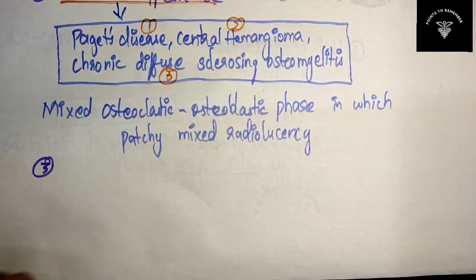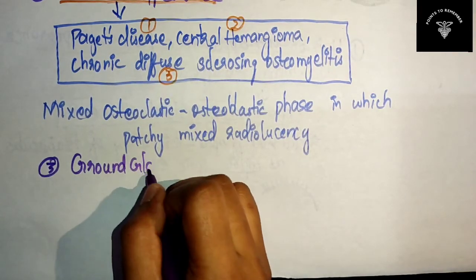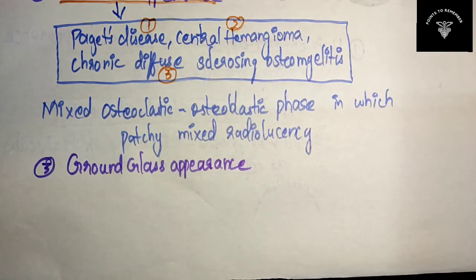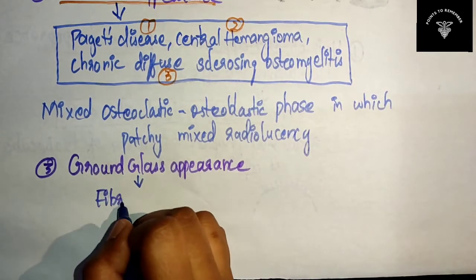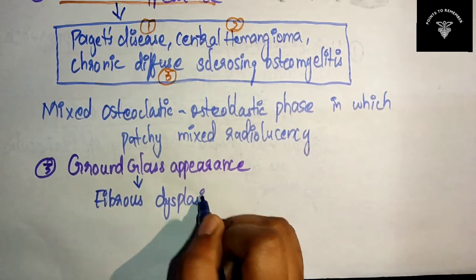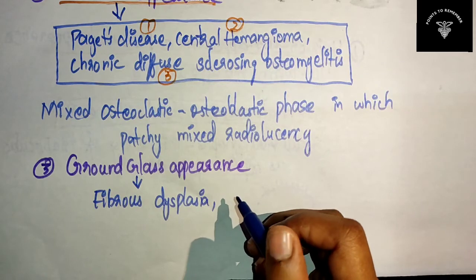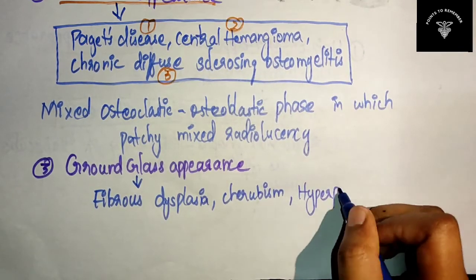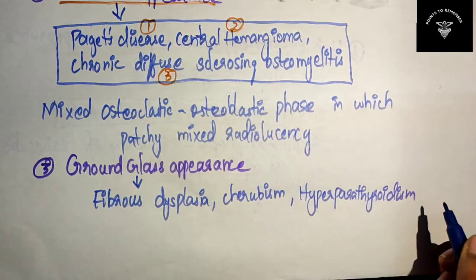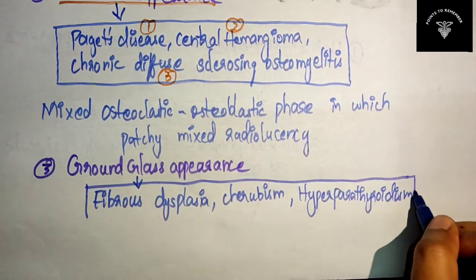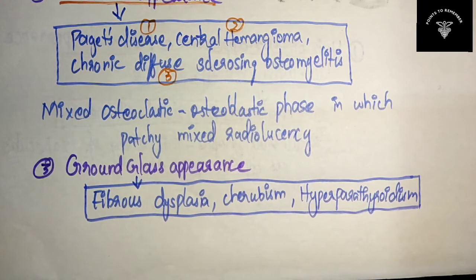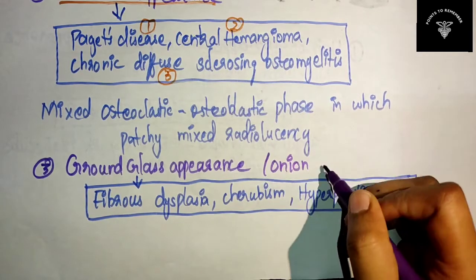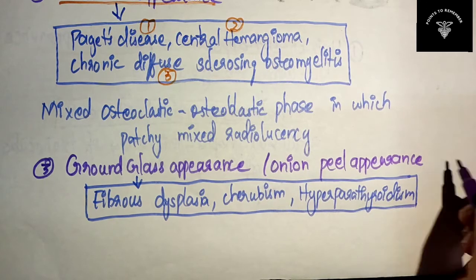The third appearance is the ground glass appearance. This is a very important appearance and it is usually seen in fibrous dysplasia. It is also seen in cherubism as well as in hyperparathyroidism. In fibrous dysplasia, the other name for this appearance is the onion peel appearance.